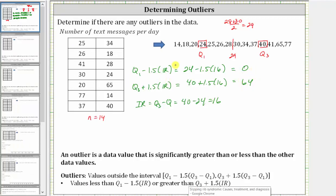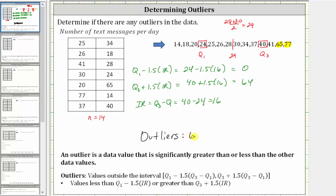This means if any data values are less than zero, it would be considered an outlier, or if there are any values greater than 64, it would be considered an outlier. We don't have any data values less than zero, but we have two values greater than 64, and therefore we have two outliers. The outliers are 65 and 77, which are considered significantly greater than the other data values. I hope you found this helpful.